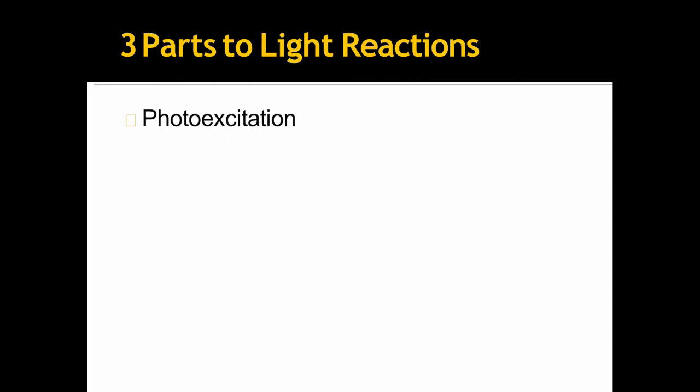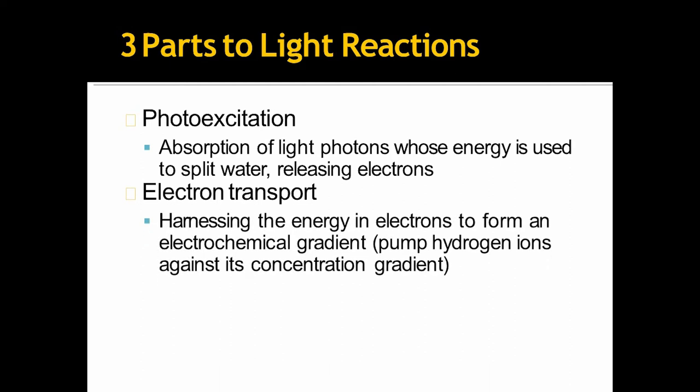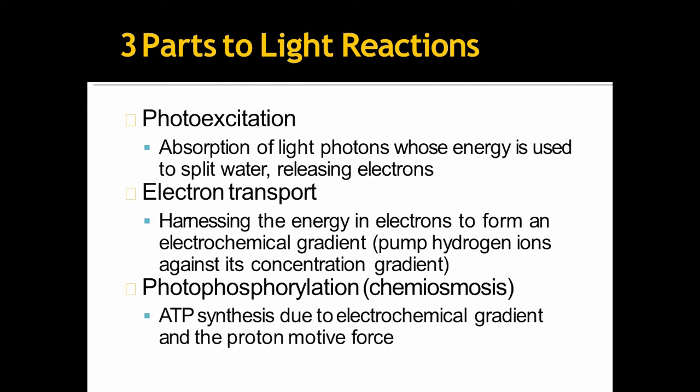Three parts of light reactions. First one is photoexcitation, where absorption of light photons, whose energy is used to split water releasing electrons. Now, electron transport. Harnessing the energy in electrons to form an electrochemical gradient or form hydrogen ions against its concentration gradient. Third step is photophosphorylation or chemiosmosis via ATP synthesis due to electrochemical gradient and proton motive force.